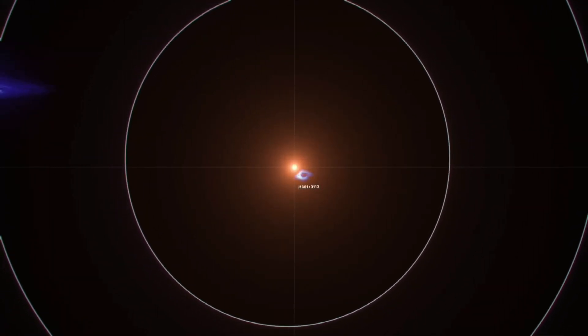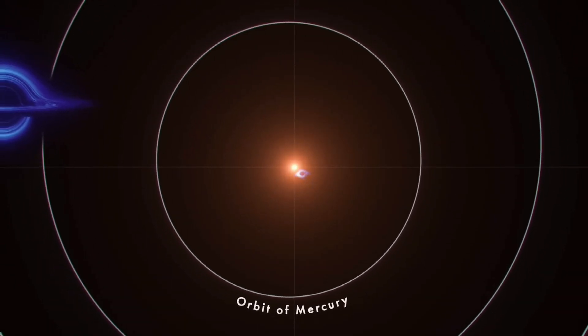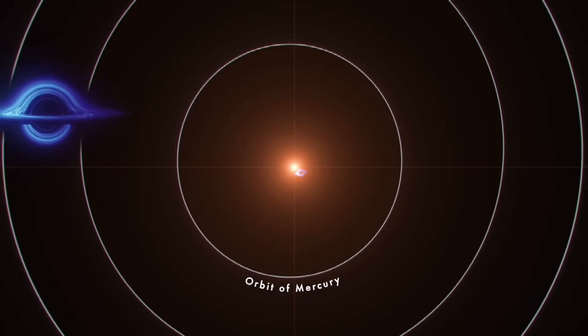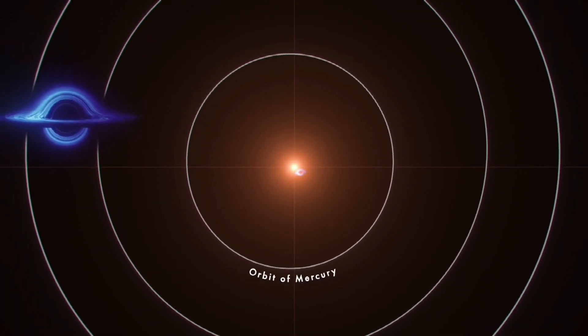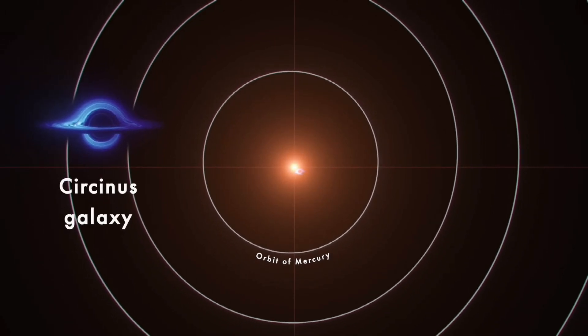The animation showcases 10 supermassive black holes situated at the centers of their respective galaxies, including the Milky Way. The camera takes us on a journey, starting from our own sun and steadily moving outwards to compare these massive entities with various structures in our solar system.